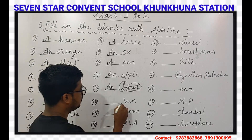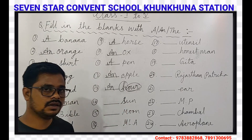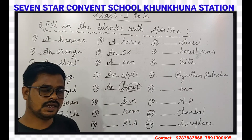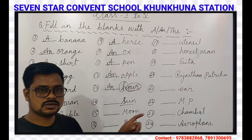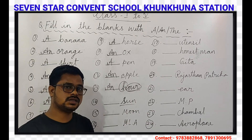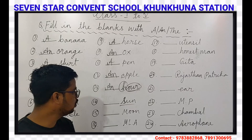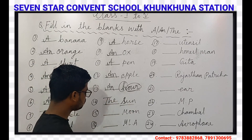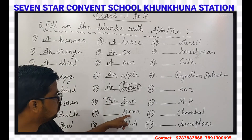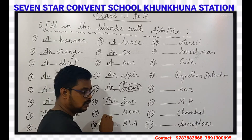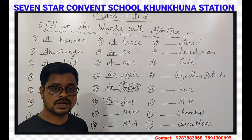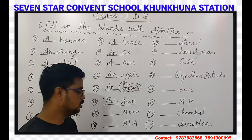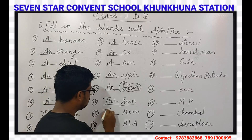Our next question is Sun. Sun is a unique thing — there is only one Sun in our solar system, so THE will come here. Our next question is Moon. Moon is also a unique thing because there is only one Moon on our Earth, so THE will come here.